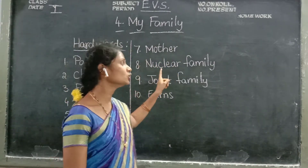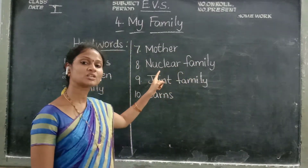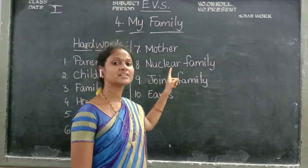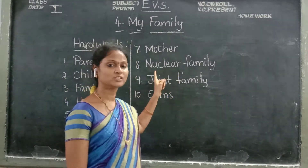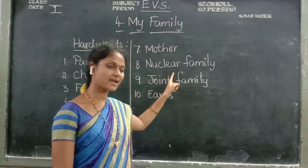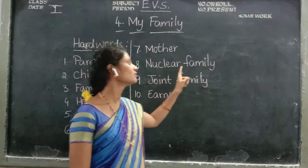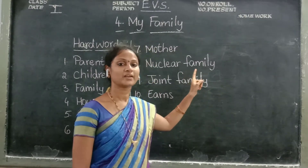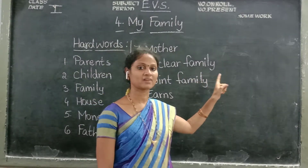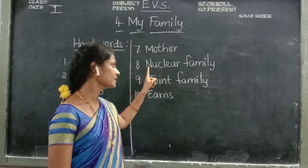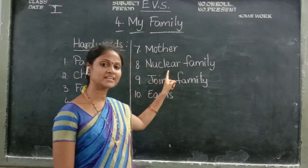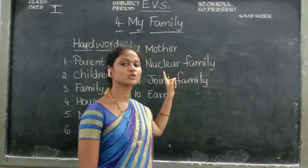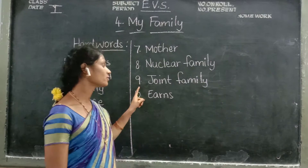Now the eighth one: nuclear family. What is the spelling of nuclear family, children? N-U-C-L-E-A-R. Nuclear. Family: F-A-M-I-L-Y. Family. Nuclear family.